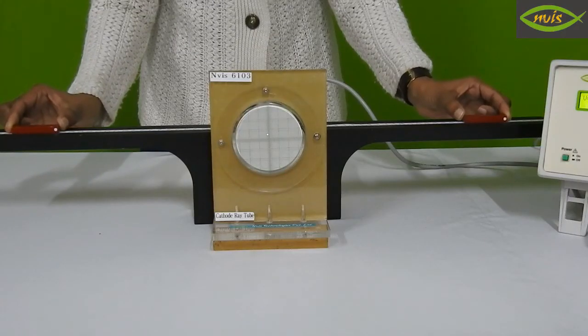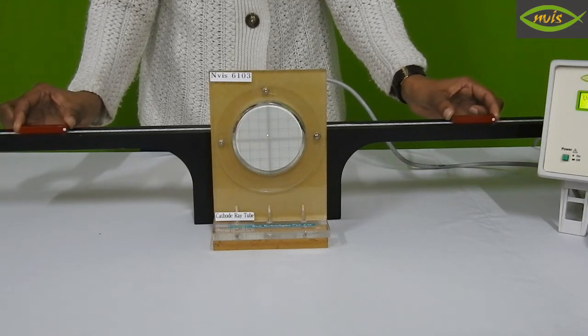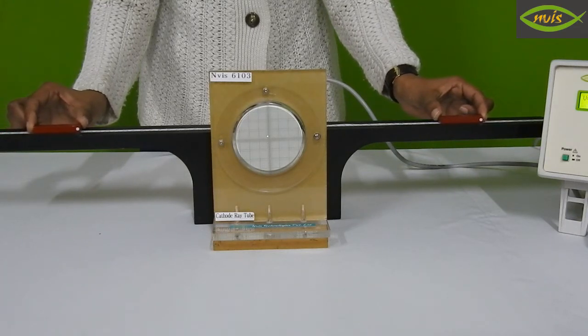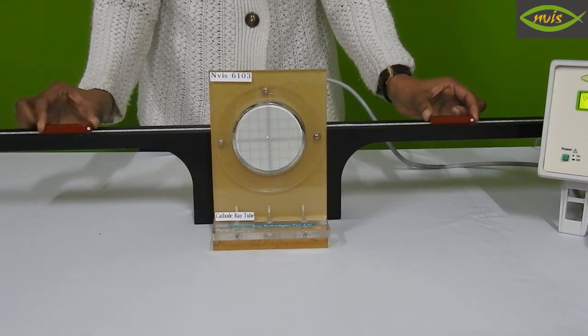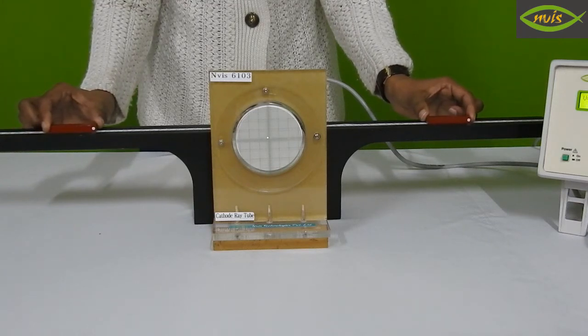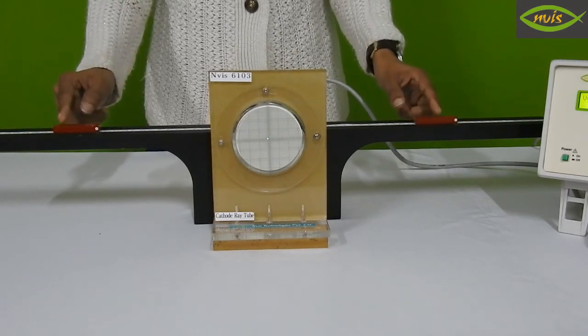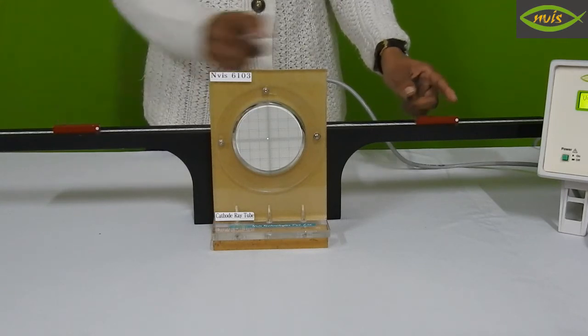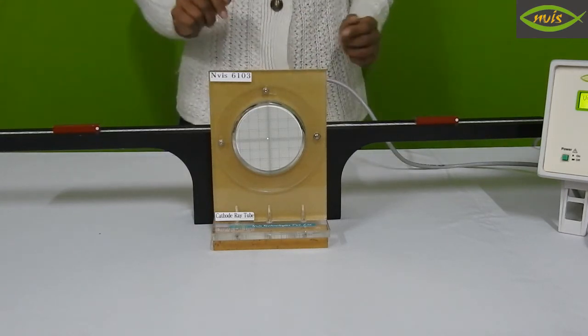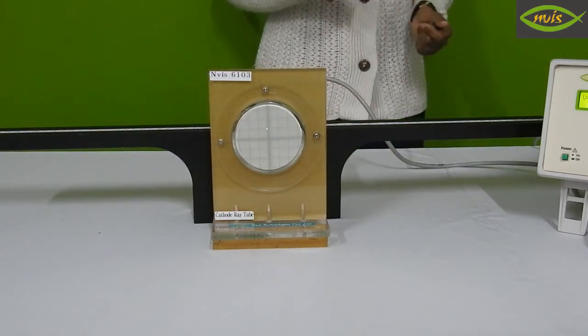Now place the bar magnets on the stand arm to both sides of CRT such that their opposite poles face each other. Adjust position of magnets to get spot back downward to original position. Note the distances of bar magnet as R1 and R2 from the scale. Now remove magnets from the arms of stand.